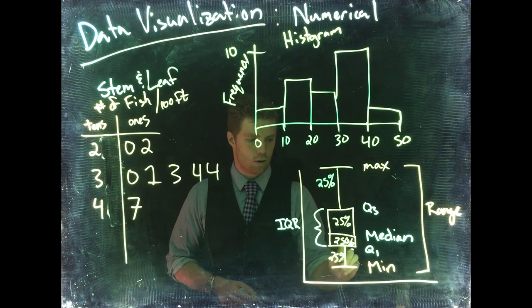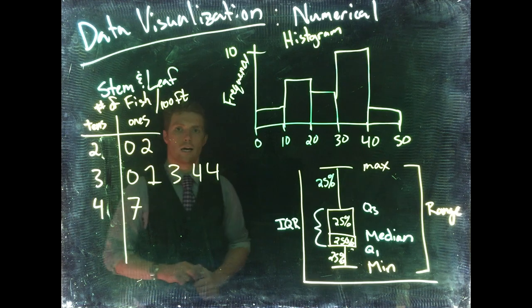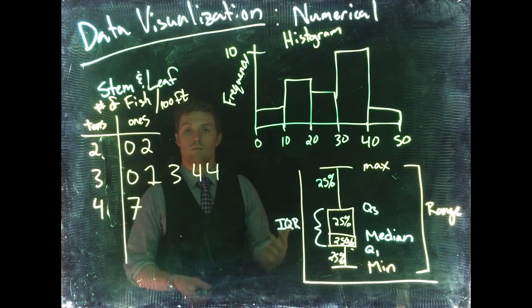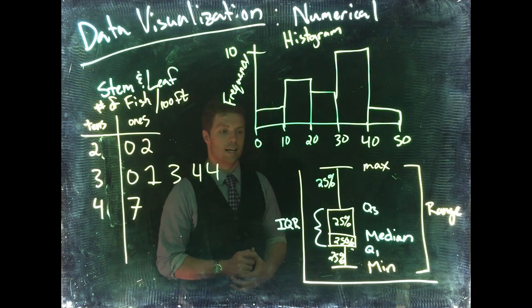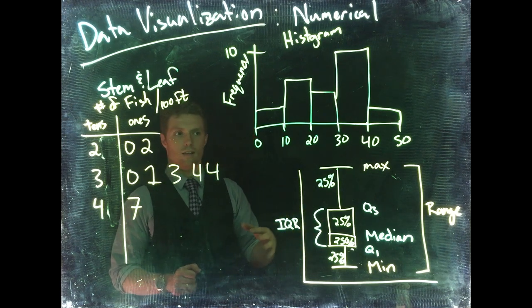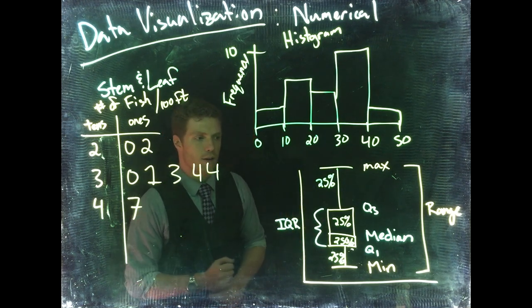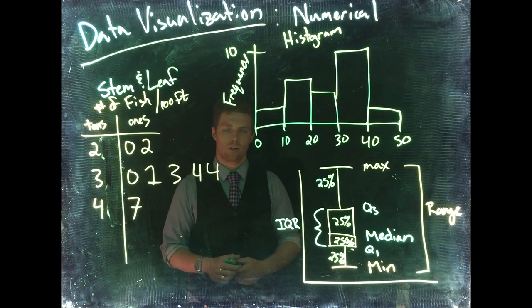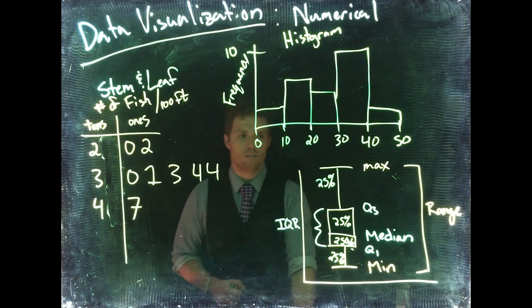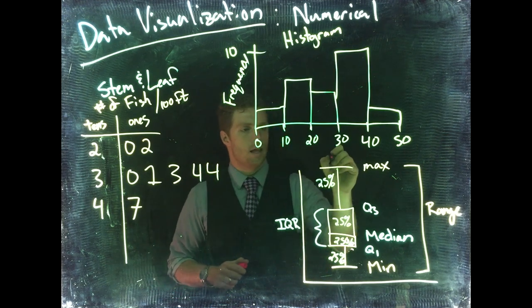The interquartile range lets us know where the middle 50 percent of the data is lying. It kind of lets us know what is happening in the middle of our data. From this we can also learn what an outlier is. Sometimes you'll see an outlier as a little circle or dot above or below the maximum or minimum.